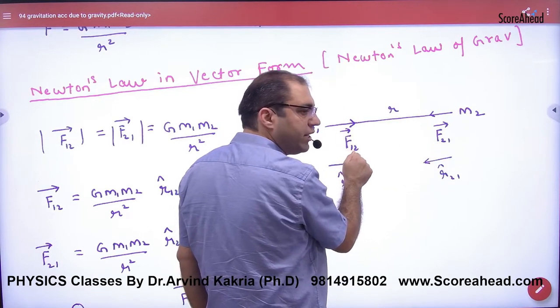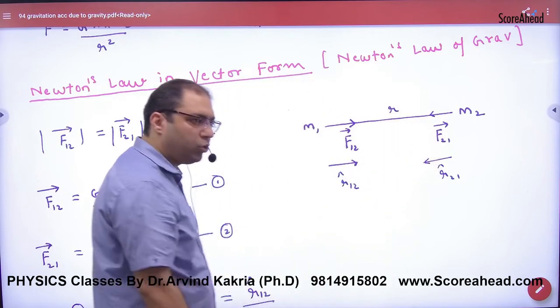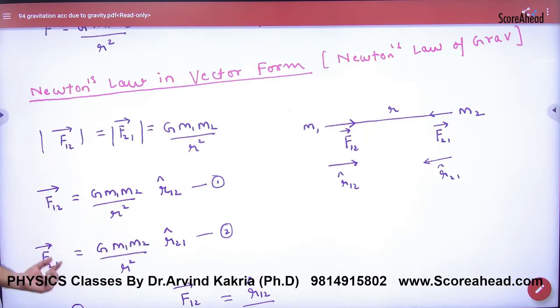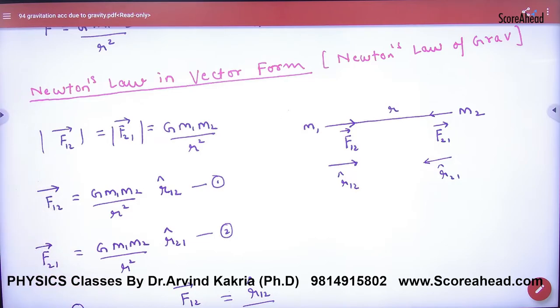The direction of F12 vector is from 1 to 2, which is r12 cap. F21 vector has the same magnitude but its direction is r21 cap.